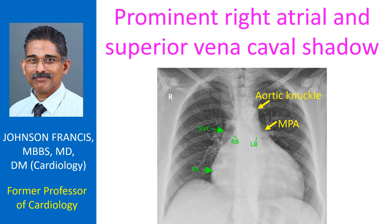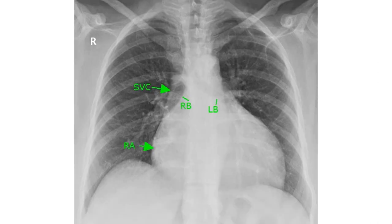The main pulmonary artery segment is visible below the aortic knuckle as a little bulge beyond the left cardiac border. The aortic knuckle is considered the first mogul and the pulmonary artery the second mogul on the left cardiac border. If the left atrial appendage is prominent, it becomes the third mogul sign.